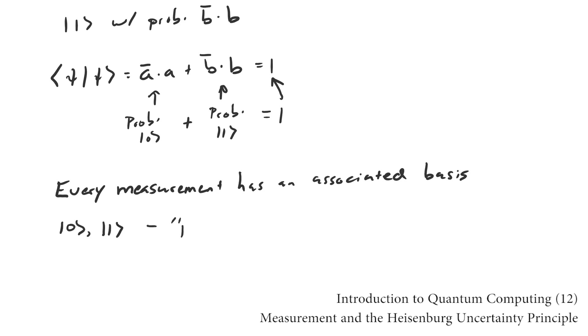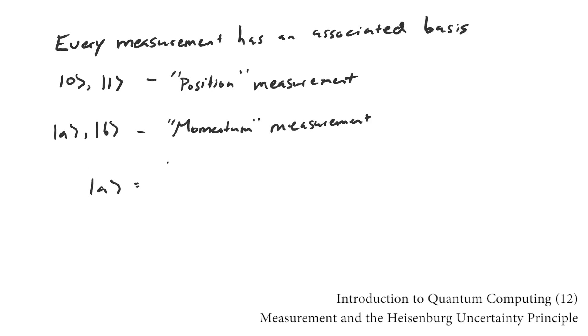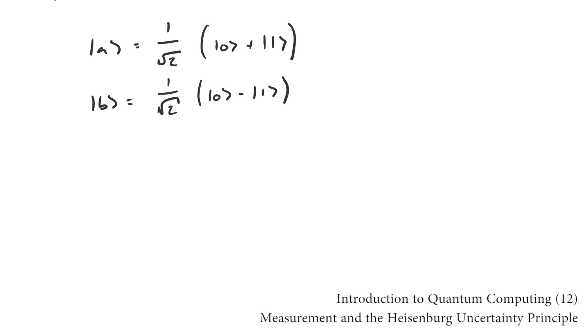So having a definitive position, that is being in one of the classical position states, guarantees an undefined momentum because the classical position states are superpositions of the classical momentum states.